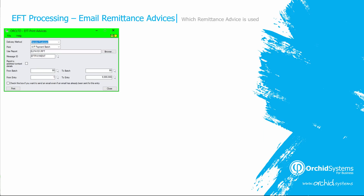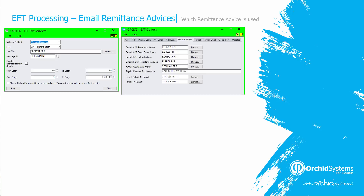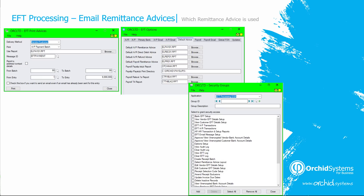When sending remittance advices in EFT print advices for AP and AR, the report used will default to the value set in EFT options on the default advice tab. Depending on the security group of the logged-on user, if they have 'select remittance advice layout' in their security group, they'll be able to change that report at runtime. If they don't have that permission, they will not be able to change the layout.